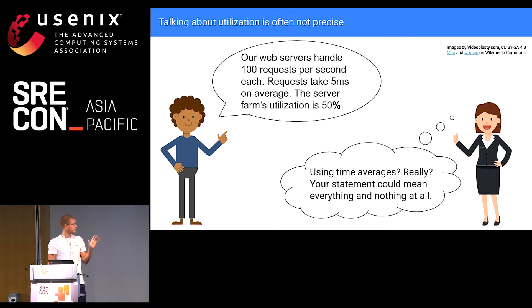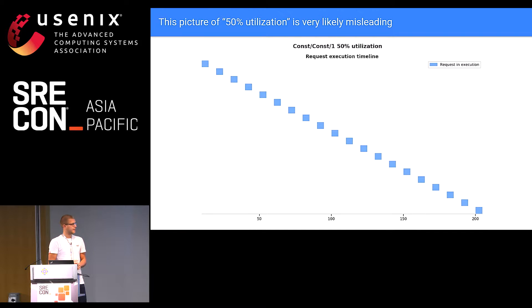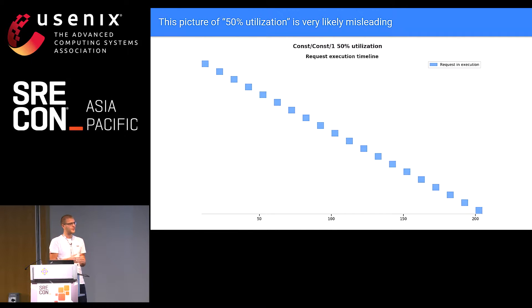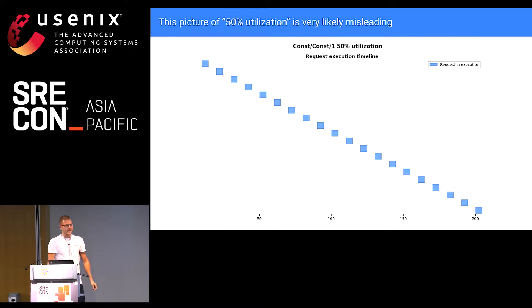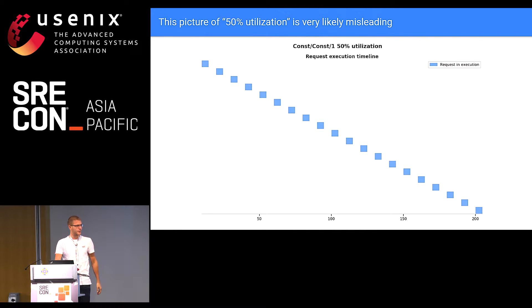Just from Joe's statement, the picture you could form in your head is this request timeline: time goes on the x-axis left to right, per row you have a single request, and the request is an execution. This box is five milliseconds wide, then there's a five-millisecond gap where the CPU is not busy, and then the next request arrives — they're all perfectly spaced, just like in real life. This is what you could interpret when someone uses time averages and you assume a constant inter-arrival time: every 10 milliseconds, like clockwork, a request arrives.